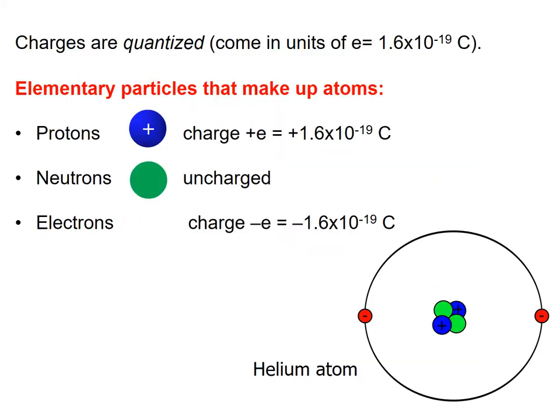Charges are quantized — they come in units of e, equal to 1.6 × 10⁻¹⁹ Coulombs. This is the value of the electron's quantized charge in Coulombs. As discussed earlier, the proton has a positive charge, the electron has a negative charge, and the neutron is neutral. A helium atom has two neutrons, two protons, and two negative electrons in its outer shell.